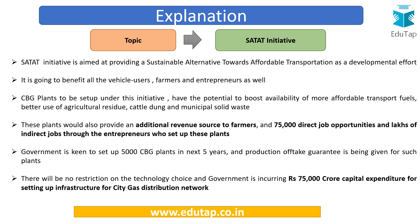SATAT is aimed at providing a sustainable alternative towards affordable transportation. It will not only help those who use transportation, but also farmers and entrepreneurs. CBG plants set up under this initiative have the potential to boost availability of transport fuels. Agriculture residue, cattle dung, and municipal solid waste will all be utilized. Additional revenue to farmers will be provided, and the government plans to set up around 5,000 CBG plants in the next five years, with a production offtake guarantee.